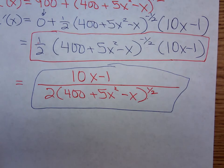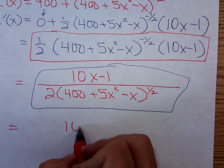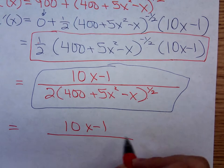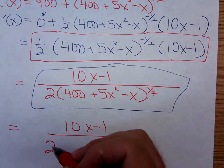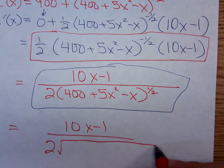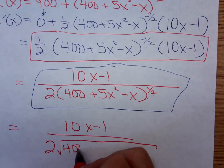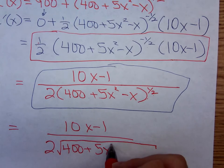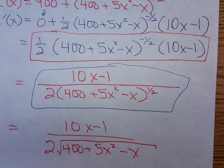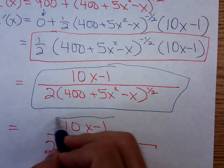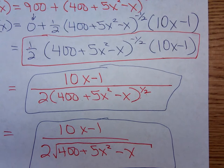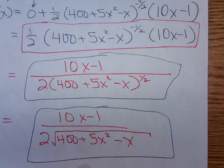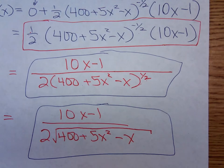But I'm going to go ahead and write it using a radical. We have (10x - 1) over two. I'm replacing that exponent of one-half with a square root. MyMathLab should accept either of those three boxed-in answers as the final answer.